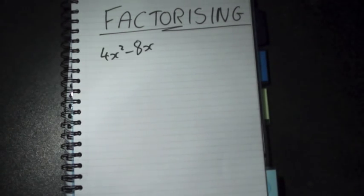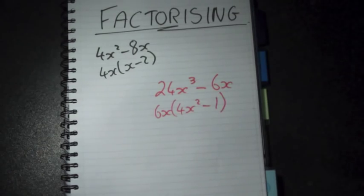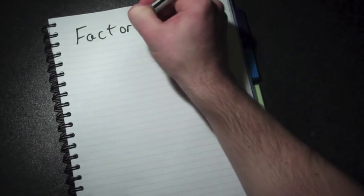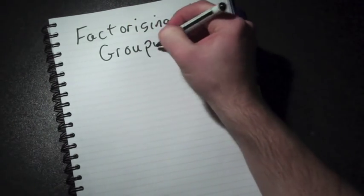In previous sections of this chapter, we learned how to factorise certain expressions. That's exactly what we're going to do to quadratics as well. Before we do that, let's just look back over a different type of factorising that we've already covered, called factorising by grouping.